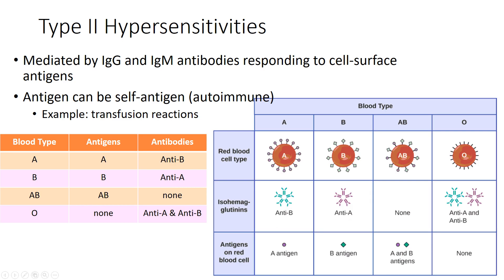Type 2 hypersensitivity involves IgG and IgM antibodies responding to a cell surface antigen, rather than IgE and mast cells as in type 1. With type 2, the body is reacting to a self-antigen expressed on one of its own cells. The most common reaction is a transfusion reaction. For example, if we are blood type A, our red blood cells have type A antigen, so we can't have antibodies against A or we'd break down our own blood — we would have antibodies against B instead.